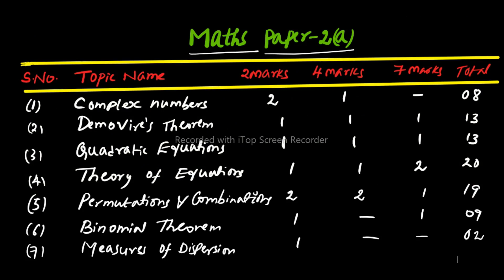Now look at Maths Paper 2A. The first topic is Complex Numbers. From Complex Numbers: 2 two-mark questions and 1 four-mark question will come — no 7 marks. That gives a total weightage of 8 marks.